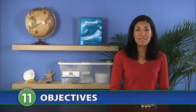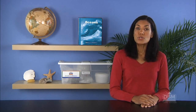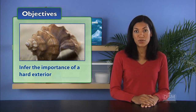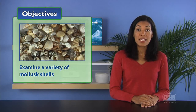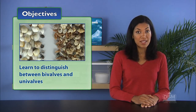In Activity 11, Life at the Ocean's Edge, students examine the shells of a variety of sea animals that live in the intertidal zone. Students first infer the importance of a hard exterior for survival, then examine a variety of mollusk shells and finally learn to distinguish between bivalves and univalves.